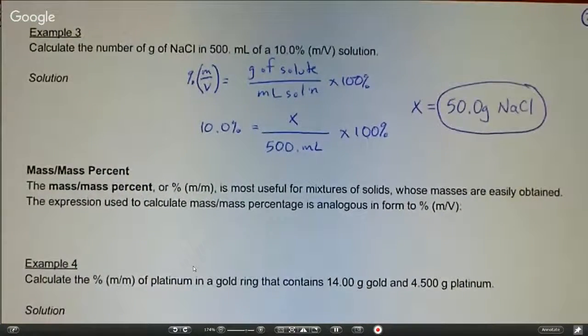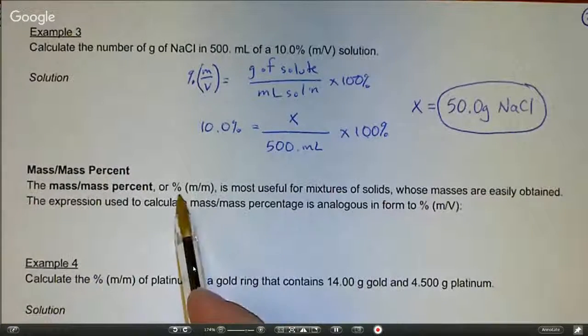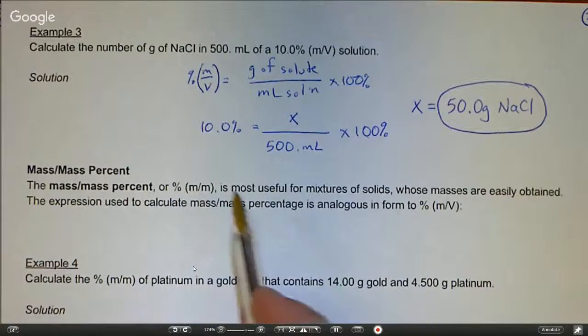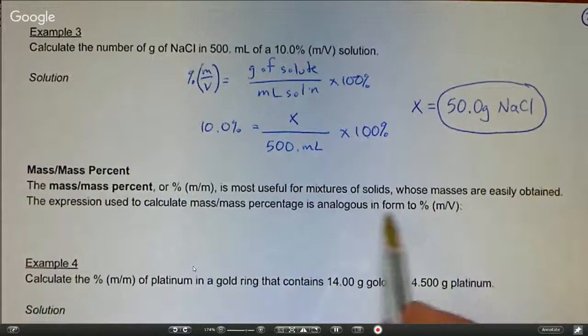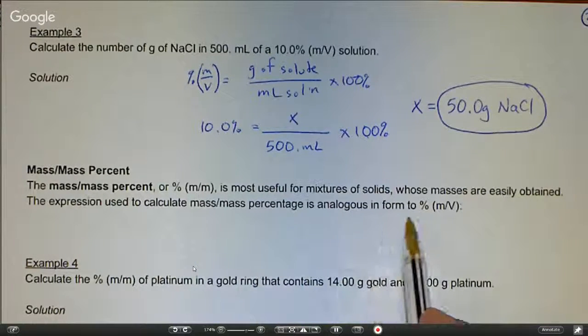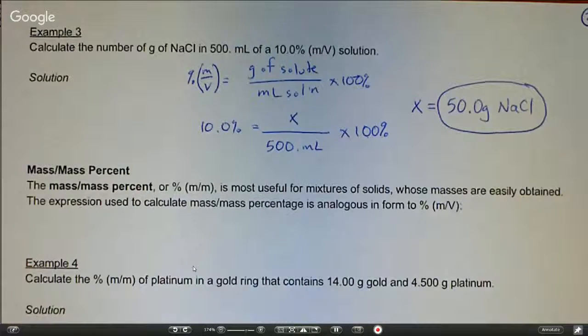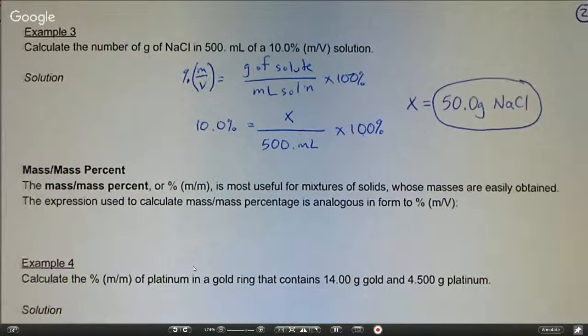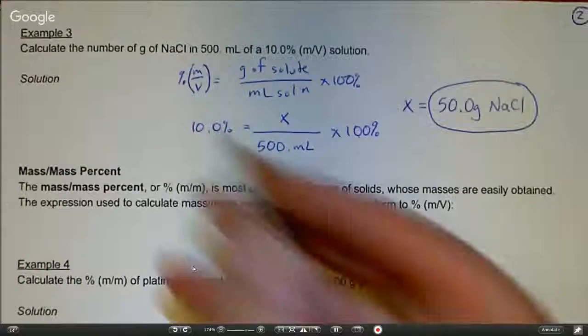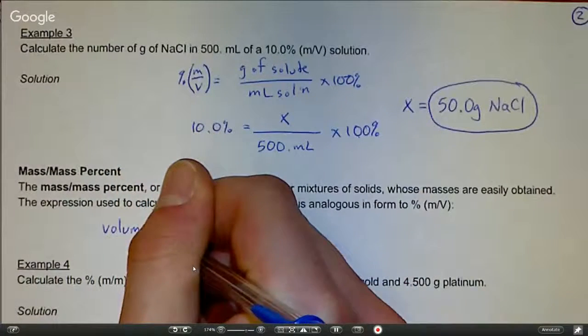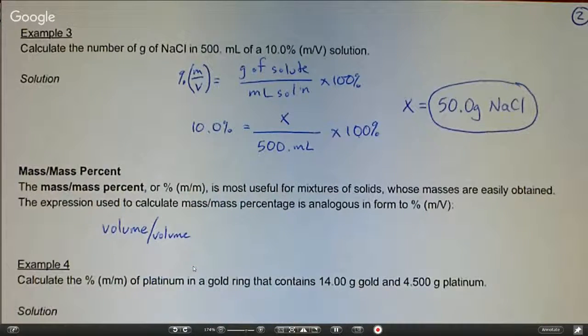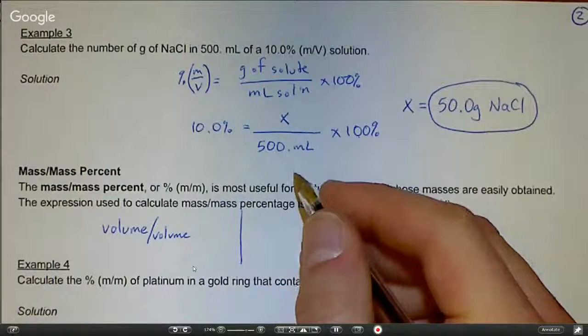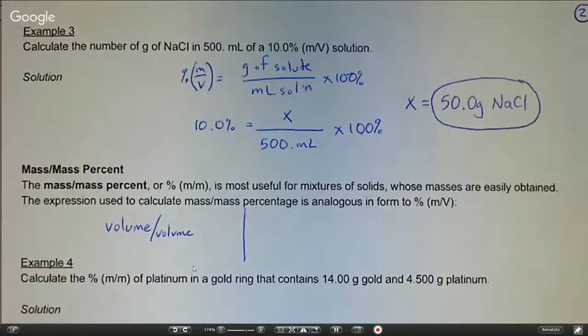The next type: before we had mass volume percent, now we're going to see mass mass percent, also written as percent m/m. This is most useful for mixtures of solids whose masses are easily obtained. The expression used to calculate this percentage is analogous in form to what we saw with mass volume. You may see some examples in the homework where you have volume volume percent, and it's going to be very similar to what we do with mass.